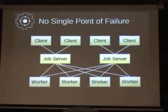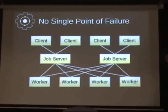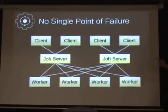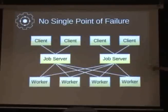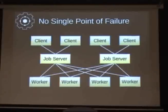How does this connect together? The clients send a request — in this case to one of two job servers. Clients can connect to either job server. When workers start up, they connect to all job servers and wait for jobs coming into any of them. If one job server goes away, clients can fail over to the other. If a worker dies, there are still enough workers. It's designed with failure in mind — things are going to crash, things are going to die, and you'll still be able to function.